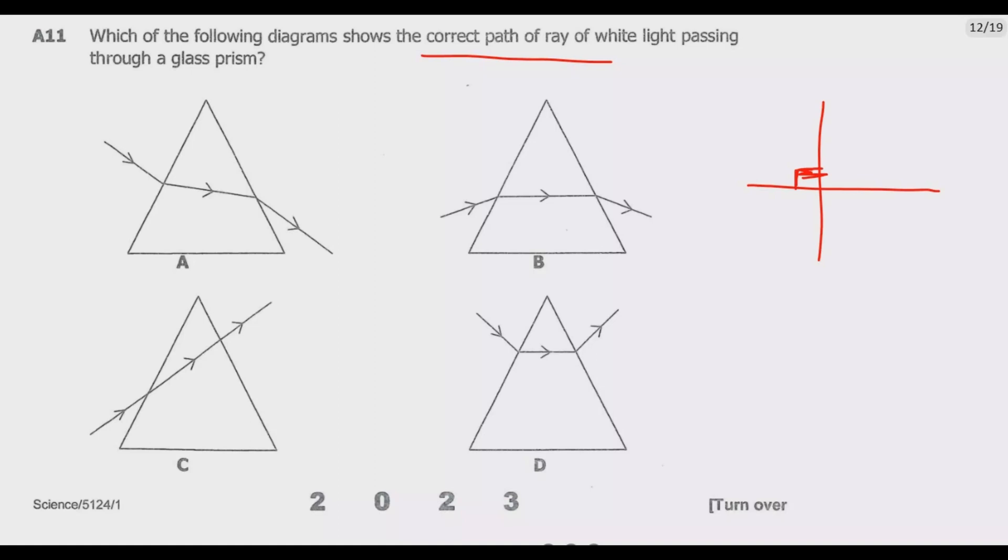If you look at option A, if I draw a normal, it will be somewhere at this point. Is the ray of light bending towards the normal? No, it's not bending towards the normal. It's away when it's entering at this point, so A cannot be correct.